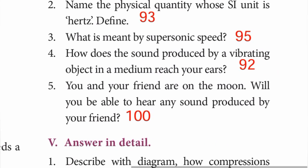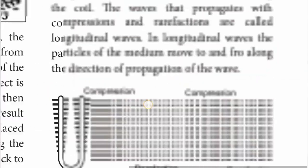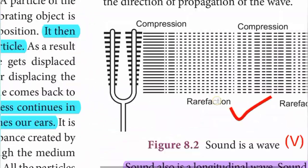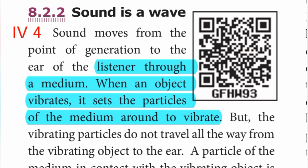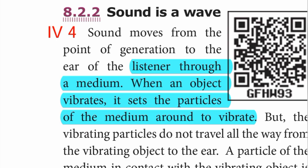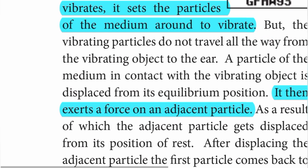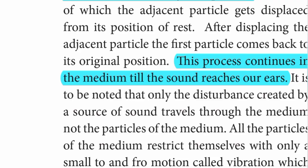Question 4: How does the sound produced by a vibrating object reach your ears? When an object vibrates, it sets the particles of the medium around it to vibrate. It then exerts a force on an adjacent particle. This process continues in the medium till the sound reaches our ears.